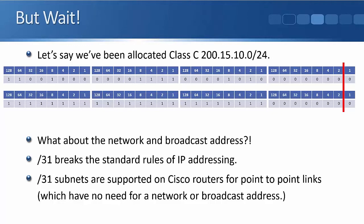If we're using a /31, there are only two possible values to assign to hosts - what about the network and broadcast address? A /31 subnet breaks the standard rules of IP addressing where we have to have the network address and broadcast address at the top and bottom of the range. However, /31 subnets are supported on Cisco routers for point-to-point links. On a point-to-point link, any traffic from one side must go to the other - there's nowhere else for it to go, so there's no real point in having a network and broadcast address. That's why Cisco allowed that exception.